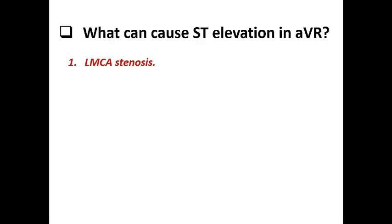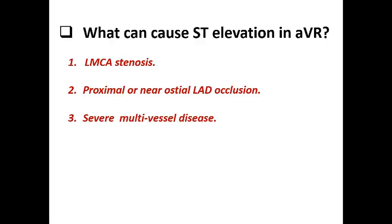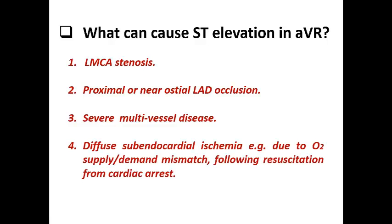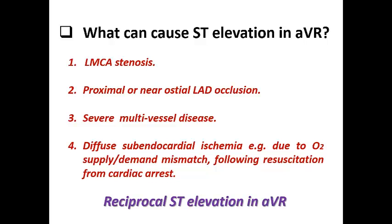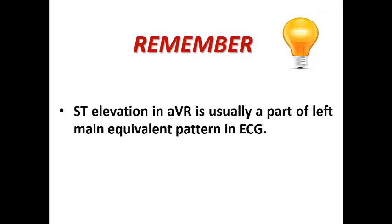Based on this, what can cause ST elevation in AVR? Left main coronary artery stenosis may cause this. Proximal or near-osteal LAD occlusion can cause ST elevation in AVR. Severe multivessel coronary artery disease and diffuse subendocardial ischemia — like in cases of oxygen supply-demand mismatch causing type 2 myocardial infarction — can result in ST elevation in AVR, because most of these presentations cause ST depression in the left-sided limb and precordial leads, causing reciprocal ST elevation in AVR. This ST elevation is therefore considered reciprocal rather than direct.